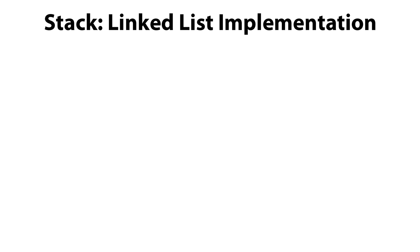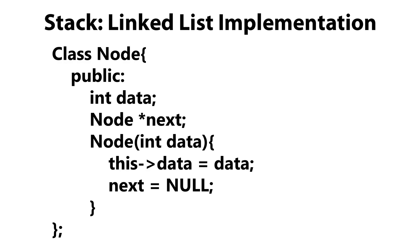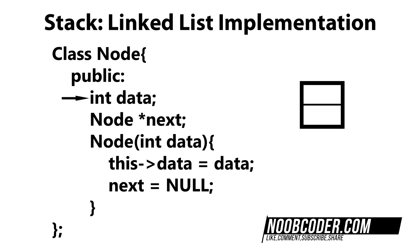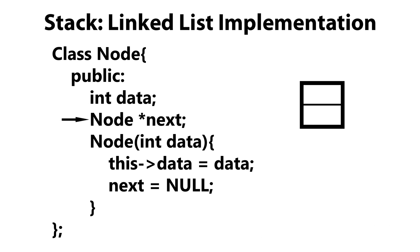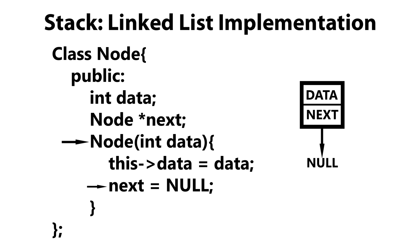To get started, we're going to create two classes. The first class is more of a helper class — we're going to create a class called Node. A node has two main components: it has the data, which in our case we're going to make an int, and it has a pointer to the next node. We have a one-argument constructor where we pass in and set our data, then set next equal to null. To keep this example as simple as possible, we're going to make everything public.